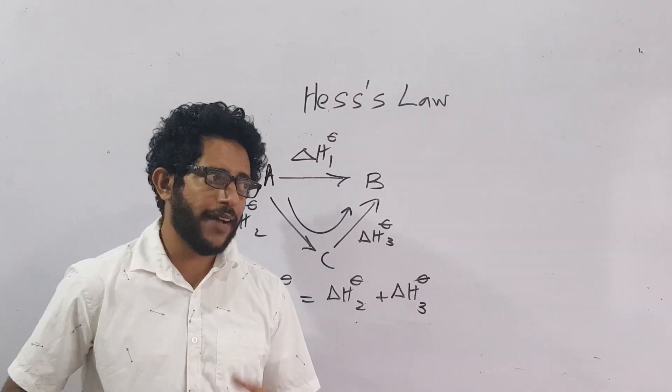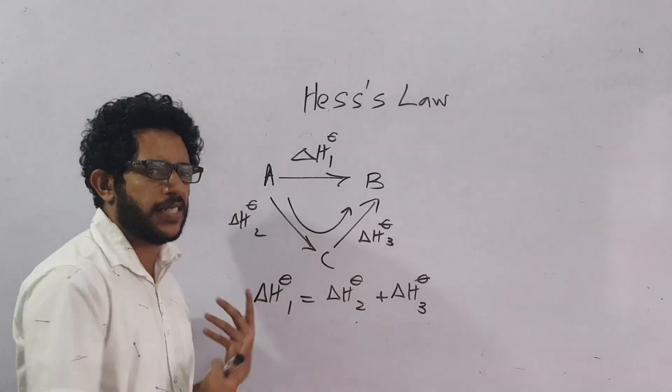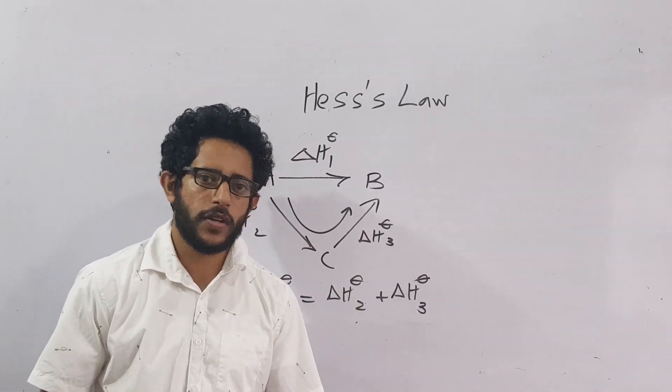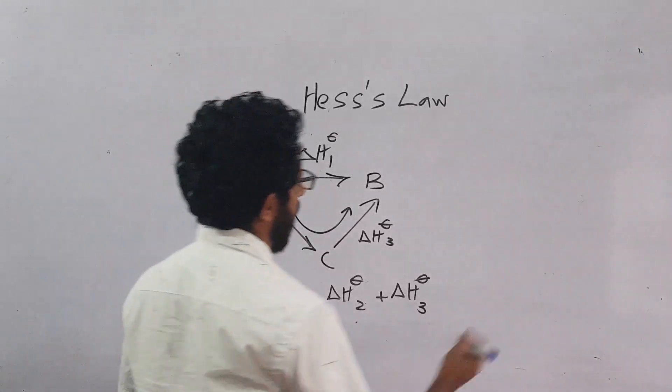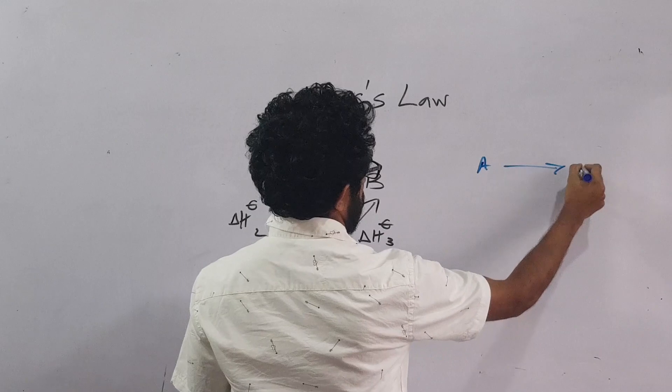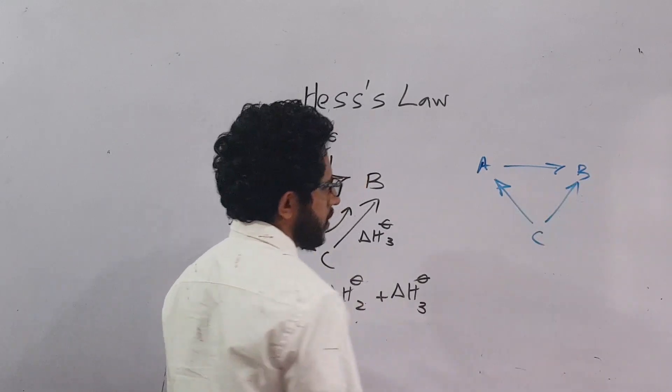We have commonly two types of these cycles. We call these cycles as Hess cycles or the way around the enthalpy cycles. For example, we can have cycles like this. A goes to B, C is here, C gives A and C gives B.